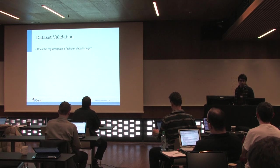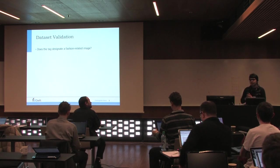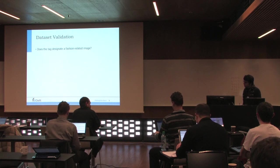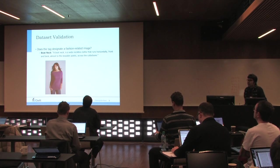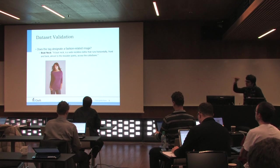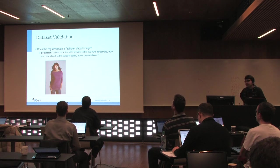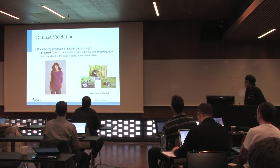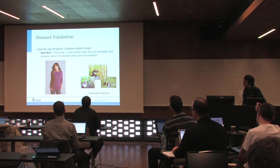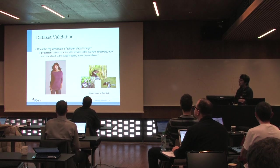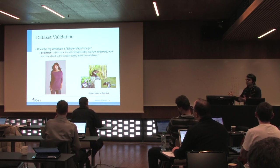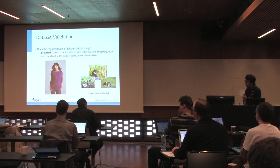There was the semantic gap problem between the tag and content of images. For example, this is a clothing item called boat-neck with the Wikipedia definition. But when we retrieved images from Flickr, there were also these images tagged as boat-necks. We need to validate this data and filter out unrelevant images.